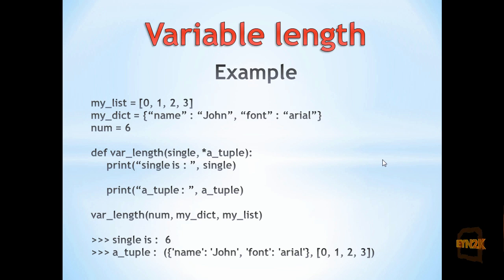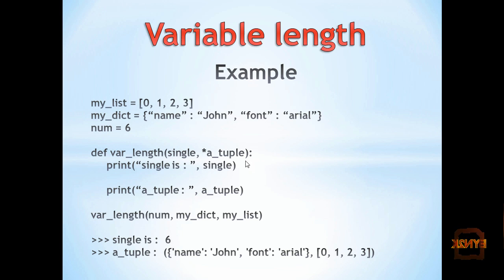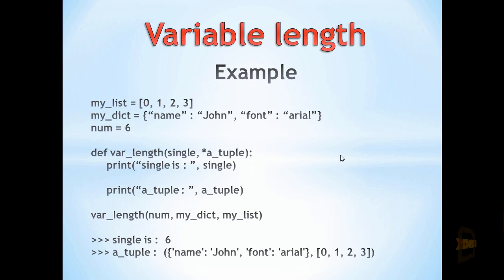This is handy because some operations are different depending on whether you operate on a tuple, and sometimes you do not know how many parameters you will be receiving. When we print off single, we are printing off six. When we print off the tuple, we are getting the tuple containing the dictionary and then the list, because we are first passing in the dictionary then the list, and the tuple is simply collecting the rest of the objects sent to the function.